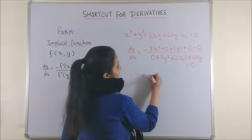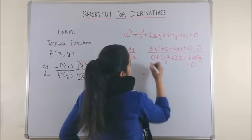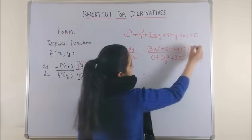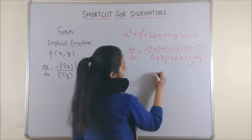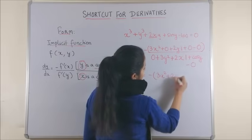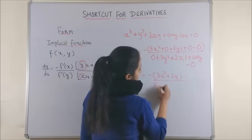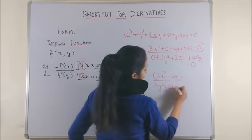This is precisely your answer. Minus is with the entire numerator. So, the precise answer is 3x square plus 2y whole upon 3y square plus 2x plus cos y.